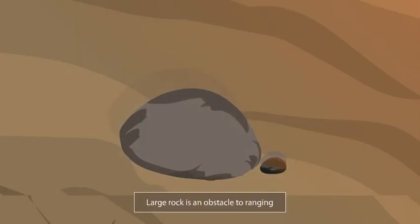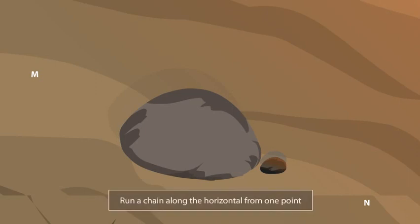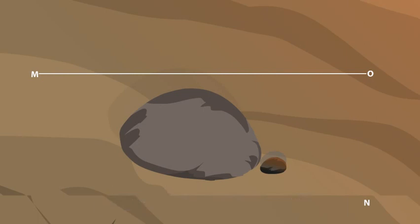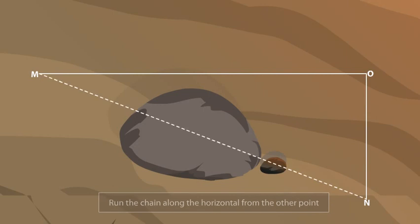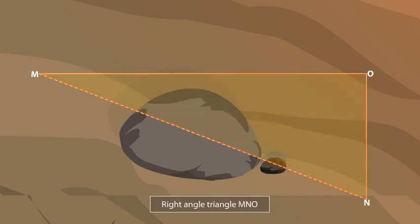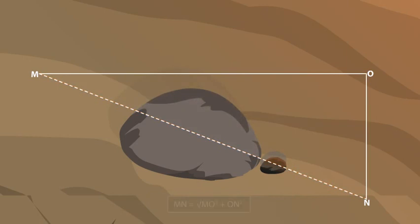Take a look at points M and N. There is a large rock between them, so ranging cannot be carried out. You can run a chain along the horizontal from M towards N up to the point directly opposite N, which is O. After that, run the chain from N to O. In this way, you obtain a right-angle triangle MNO.